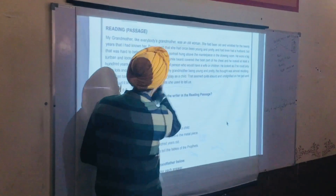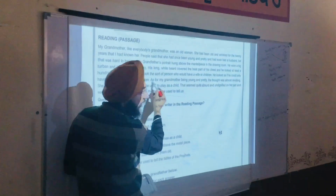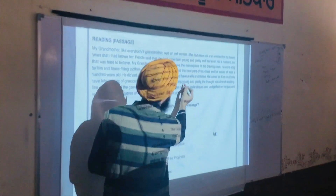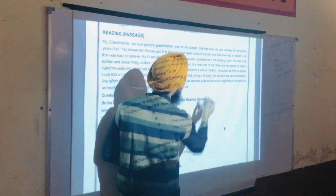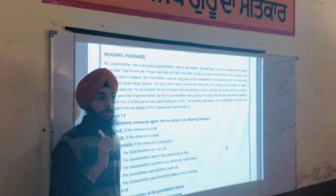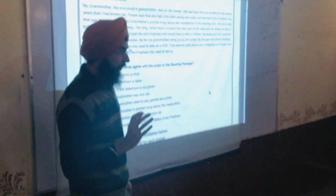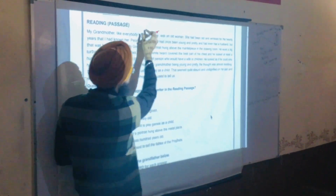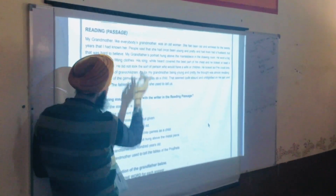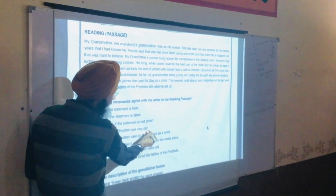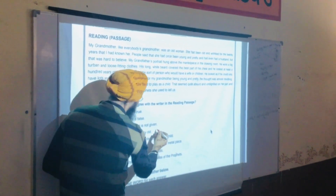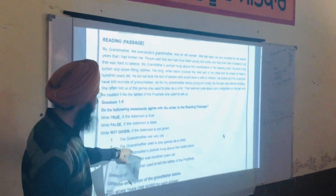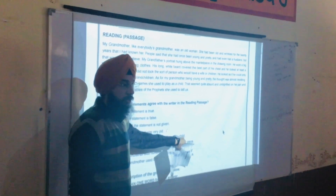When you read through this passage you will find: 'As for my grandmother being young and pretty' — it means that grandmother was not very old. The answer is in the middle of the passage, not at the starting. So the answer will be False.